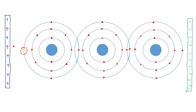A hole is nothing but a vacant place of an electron, but it is considered a positive charge particle because a negative charge particle — the electron — has left it. This free electron is attracted by the positive terminal, and the hole created can attract any other free electron from another atom.